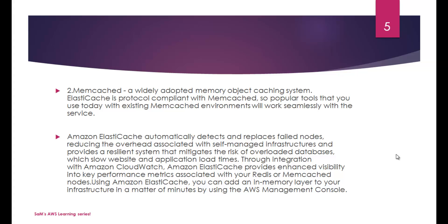The next type is Memcached — a widely adopted memory object caching system. ElastiCache is protocol-compliant with Memcached, so popular tools you use today with existing Memcached environments will work seamlessly with the service. It's your choice between Memcached or Redis; both are open source. Amazon ElastiCache automatically detects and replaces failed nodes, reducing overhead associated with self-managed infrastructure and mitigating the risk of overloaded databases.